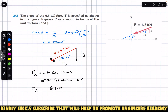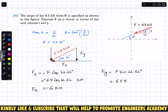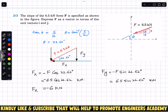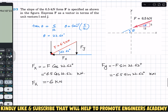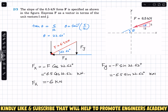So the scalar component of that force F in the x-direction is minus 6 kN. Similarly, if F of x is the cosine component, then F of y must be the sine component. So F of y is F sine of 22.62 degrees. F of y is also in the negative y-direction, so we write minus 6.5 sine of 22.62 degrees. This gives us 2.5 kN. So F of y is equal to minus 2.5 kN.